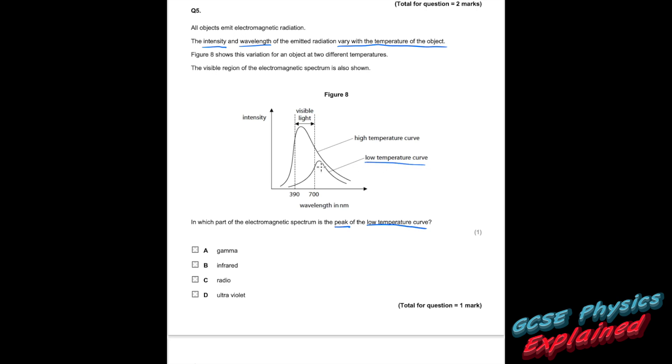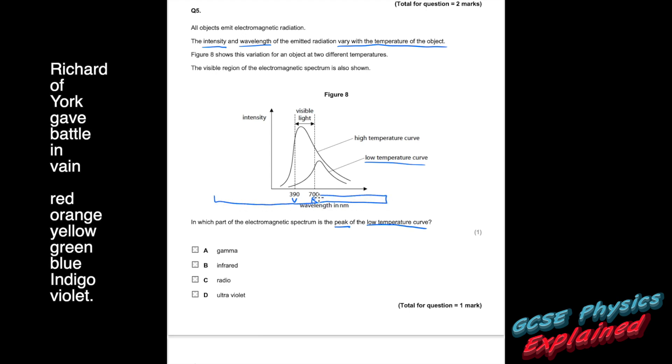In which part of the electromagnetic spectrum is the peak of the low temperature curve? Right, low temperature curve here. As I said before, red's got the longest wavelength, violet's got the short. If we were to do the electromagnetic spectrum, that's your visible light there. So just outside of the visible light, that's infrared. So that's your answer there, B.